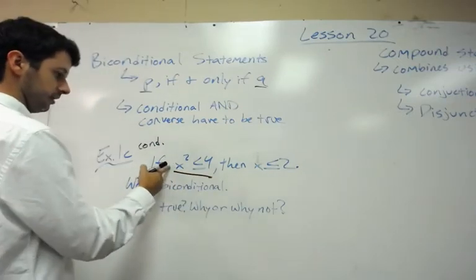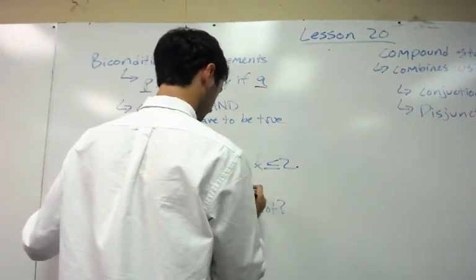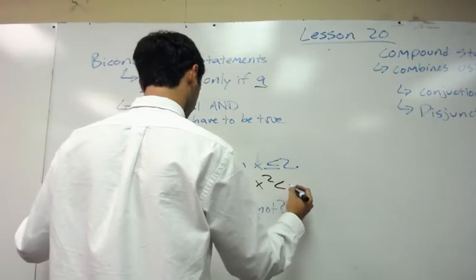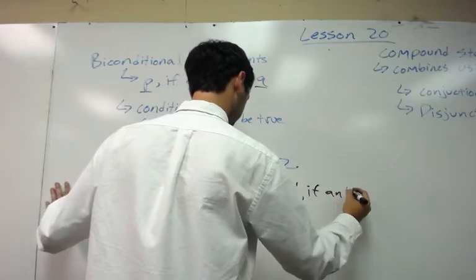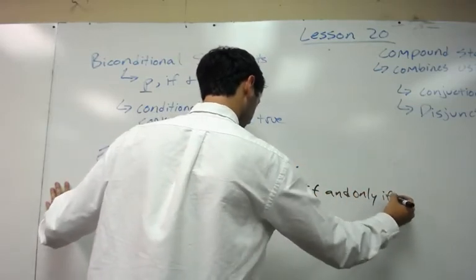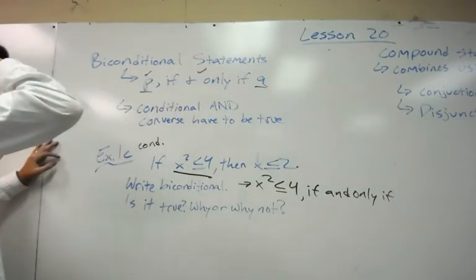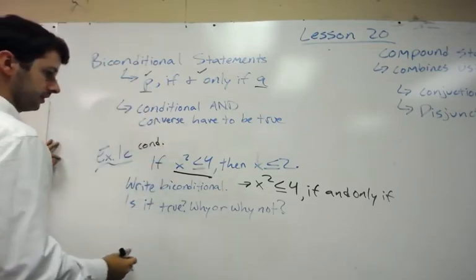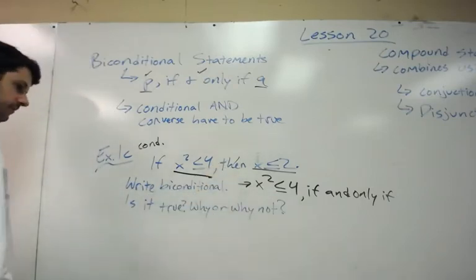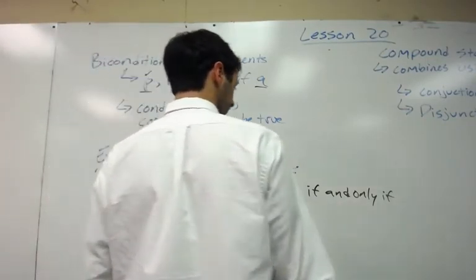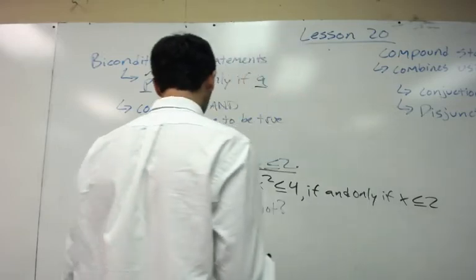So biconditional, we start with P, and our hypothesis is x squared is less than or equal to 4, if and only if. Now we just write the Q, the conclusion. So our conclusion is right here. Notice, then is not within the conclusion. So x squared is less than or equal to 4, if and only if x is less than or equal to 2, would be your biconditional statement.